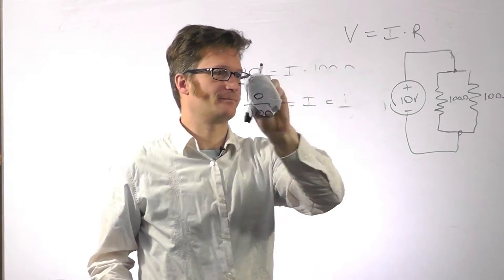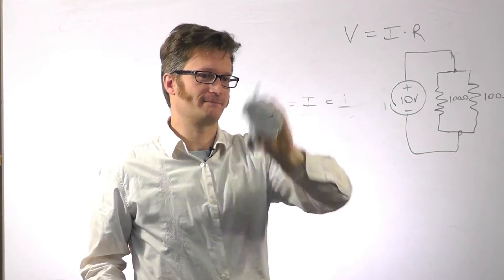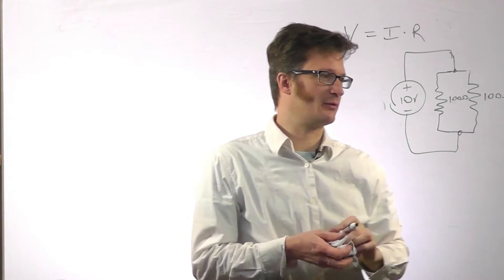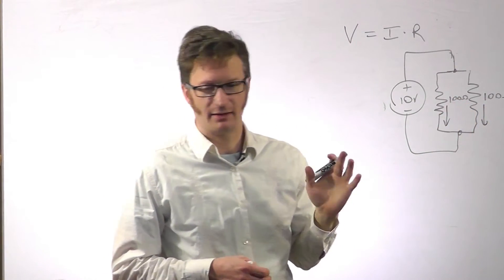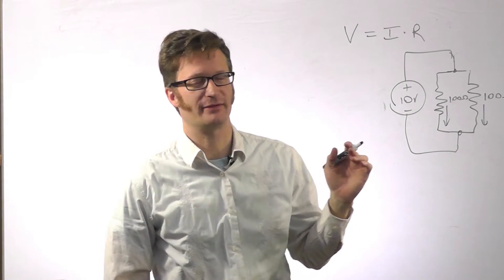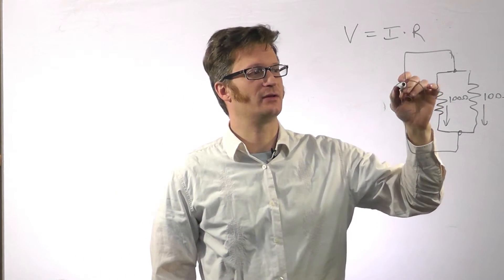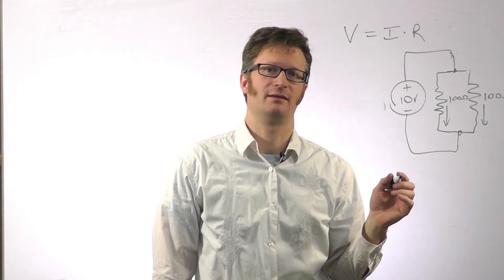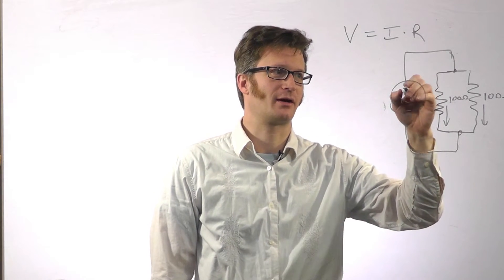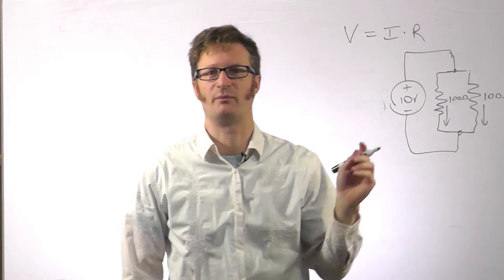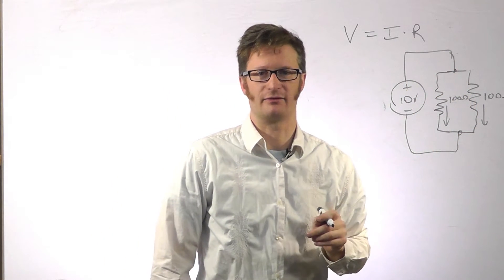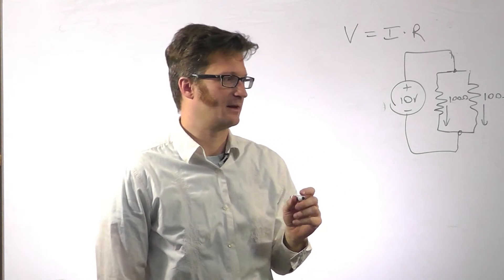So now we know that we have 0.1 amps going down through here and down from here. And I should say it because I haven't said it previously. When you are looking at a schematic, the convention is that the power comes out of the positive terminal and flows down through everything and comes back into the negative terminal.